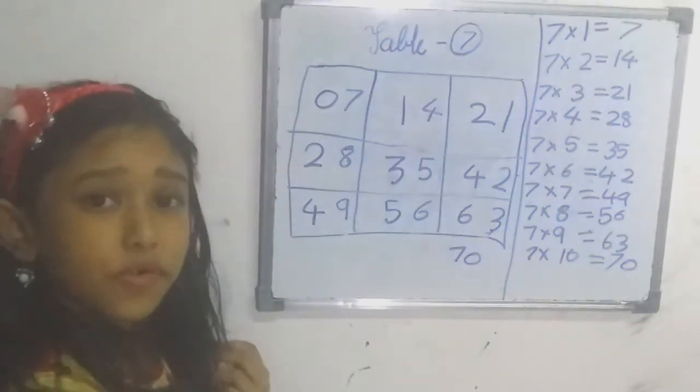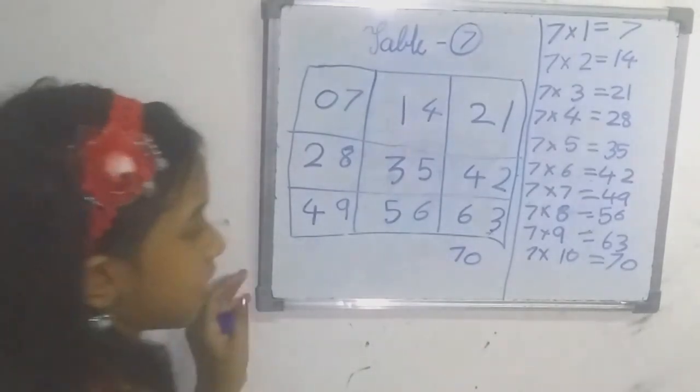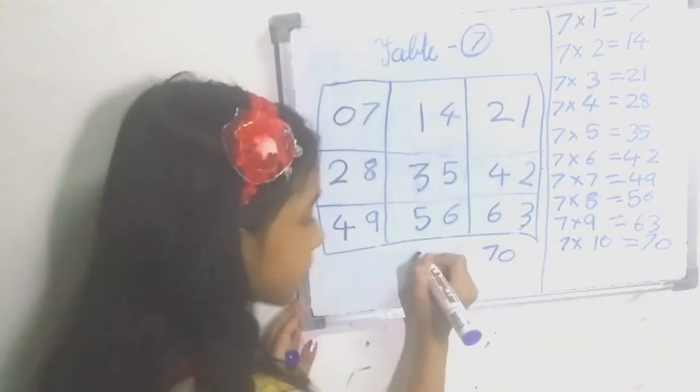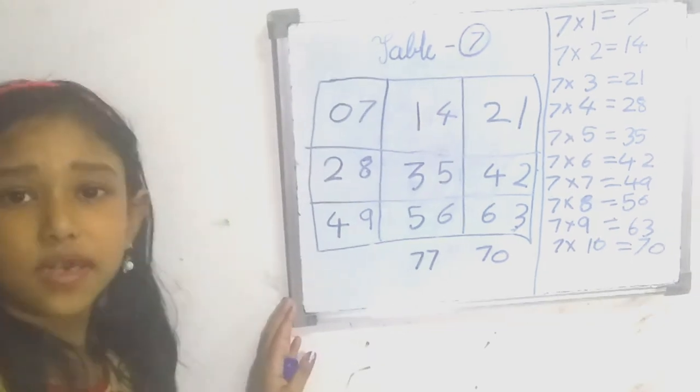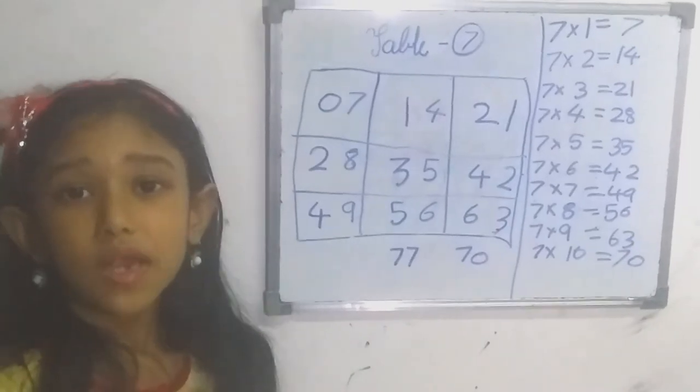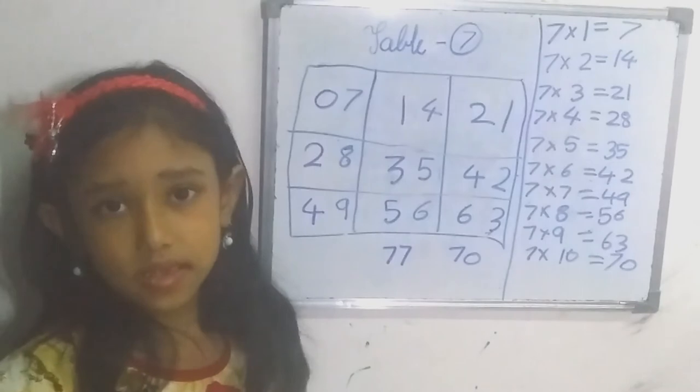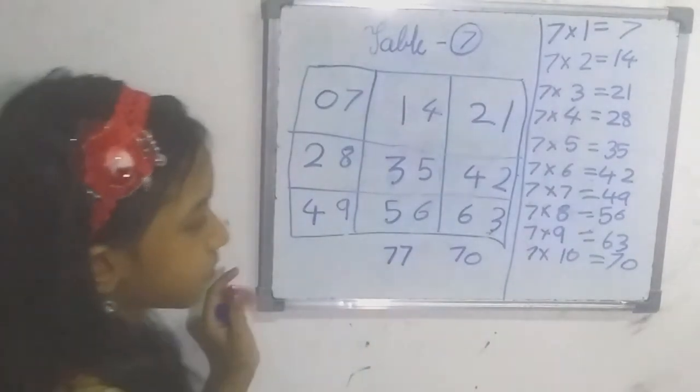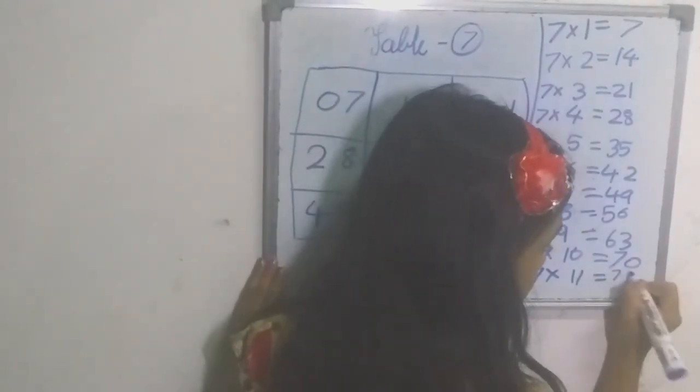And for seven elevens, the answer is very simple, it's 77. If it is eight elevens, the answer will be the same, 88. Seven elevens are 77.